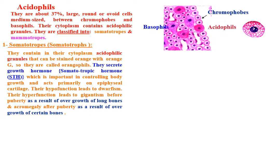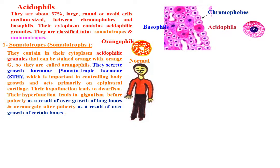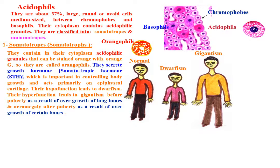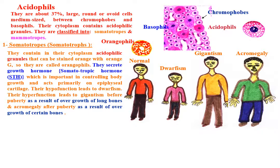Somatotropes contain acidophilic granules in their cytoplasm which can be stained orange with Orange G, so they are called orangophiles. They secrete growth hormone, somatotropic hormone (STH), which is important in controlling body growth and acts primarily on the epiphyseal cartilage. Their hypofunction leads to dwarfism, while hyperfunction leads to gigantism before puberty due to overgrowth of long bones, and acromegaly after puberty due to overgrowth of certain bones.